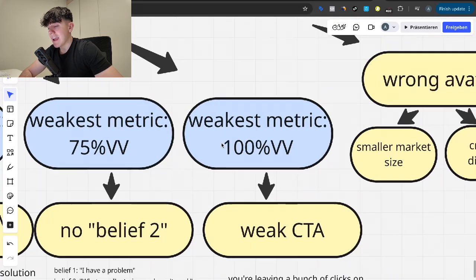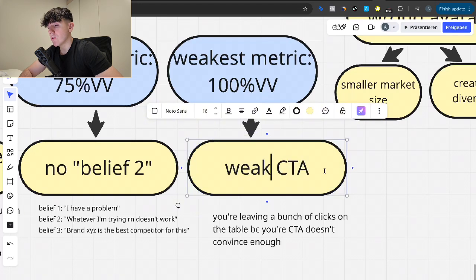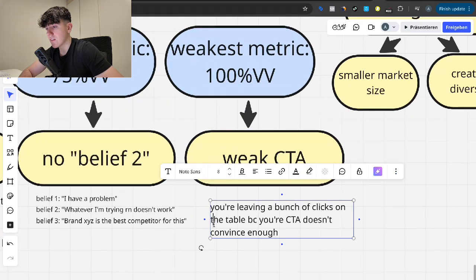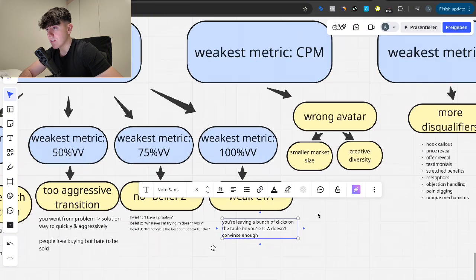So if you struggle with 75% video views, then you have likely skipped the belief two and people just don't care about you as a brand because they're not open for new solutions and their egos went against you. 100% video views is telling you that you have a very weak call to action. So you're just leaving a bunch of clicks on the table because your call to action doesn't convince enough.